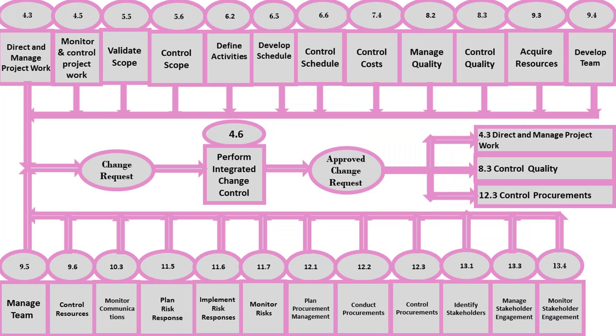Approved Change Requests may be a corrective action, a preventative action, or a defect repair. Once change requests are approved, they are implemented through the Direct and Manage Project Work process. Repair is then verified in the Control Quality process, and any modification to the terms and conditions of the contract is implemented if applicable. Approved change requests are scheduled and implemented by the project team and can impact any area of the project or project management plan.